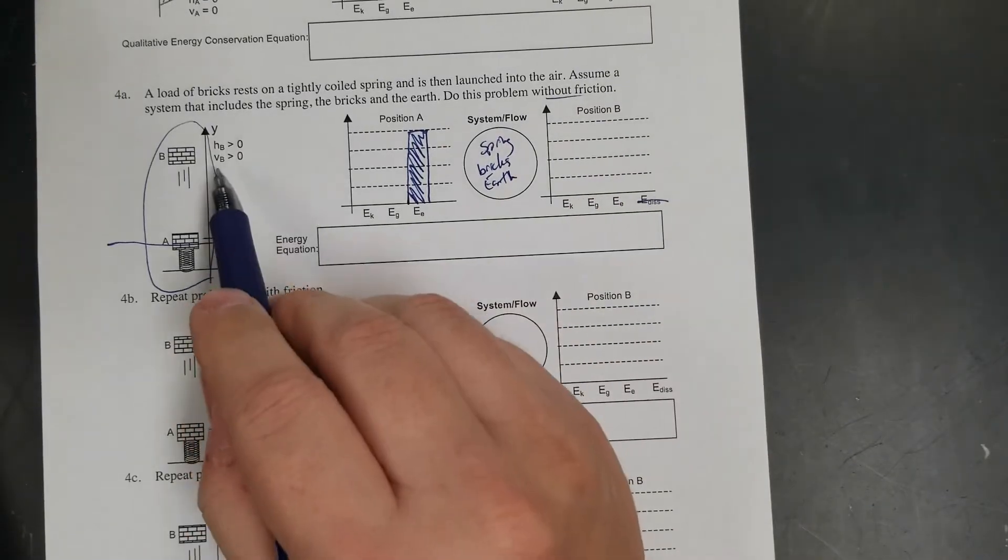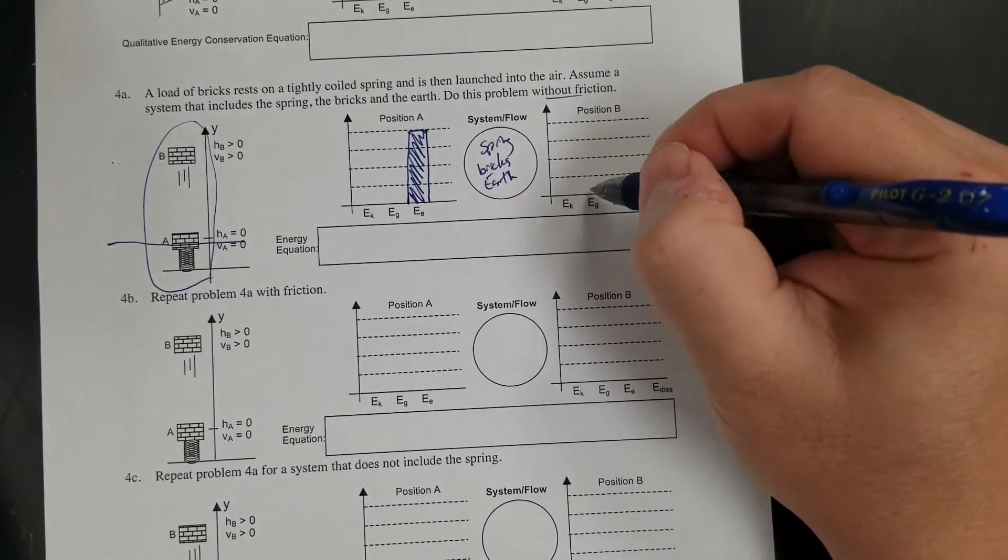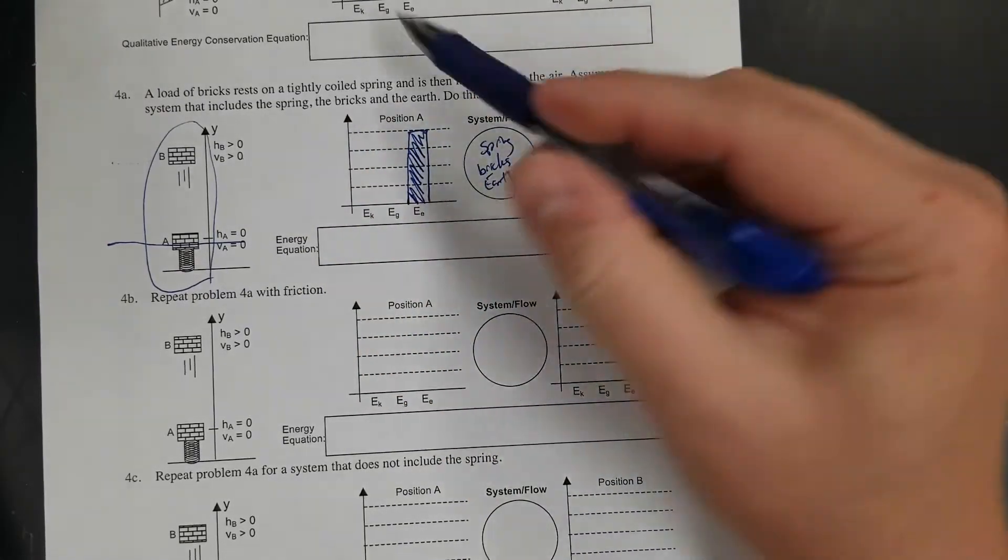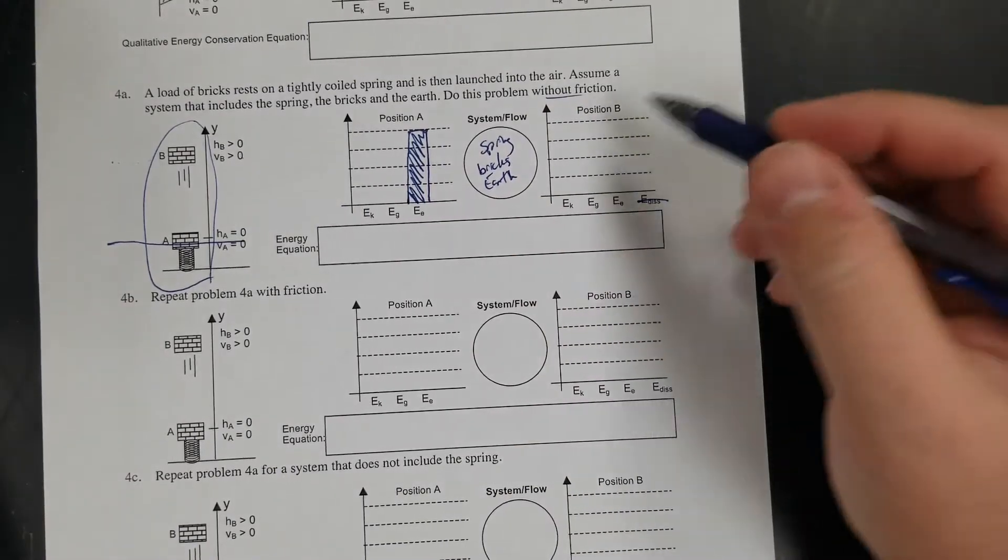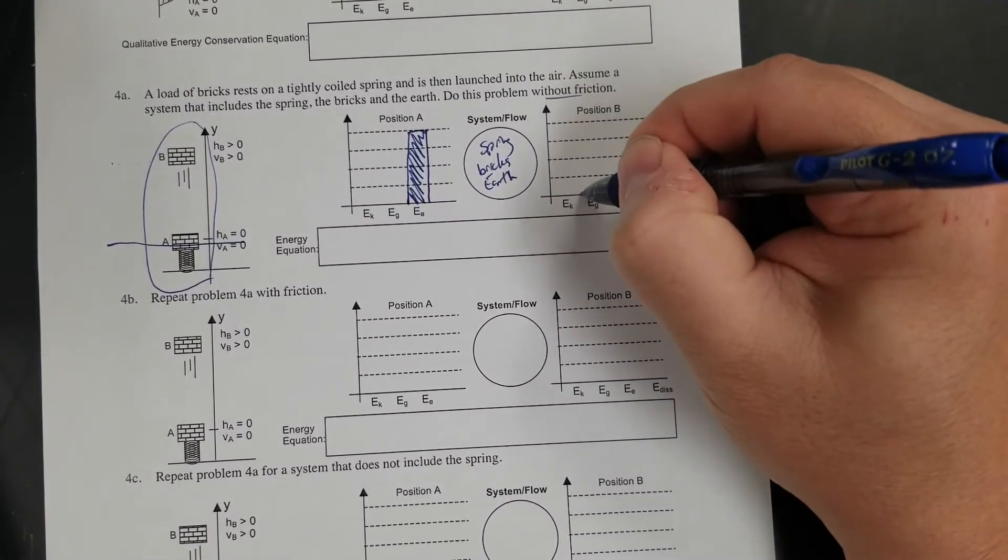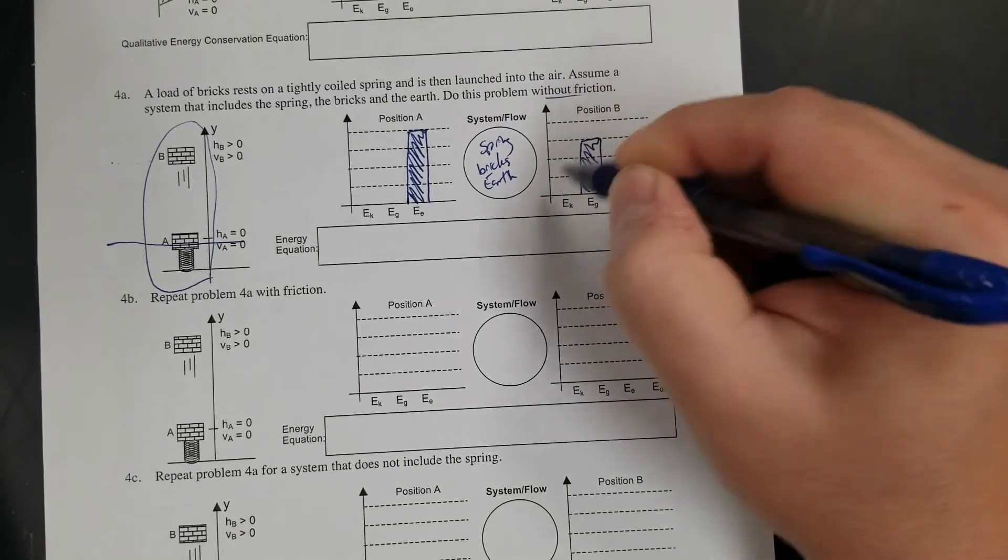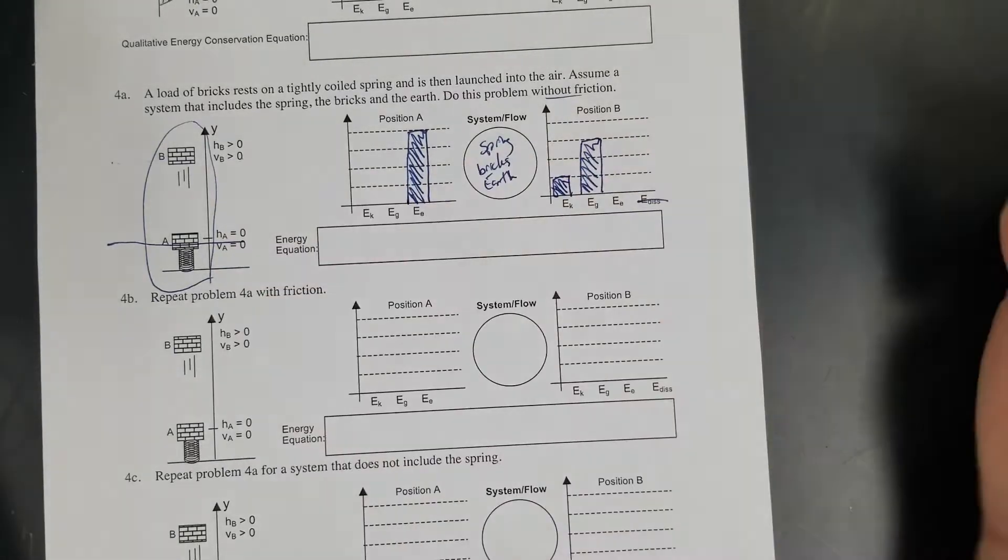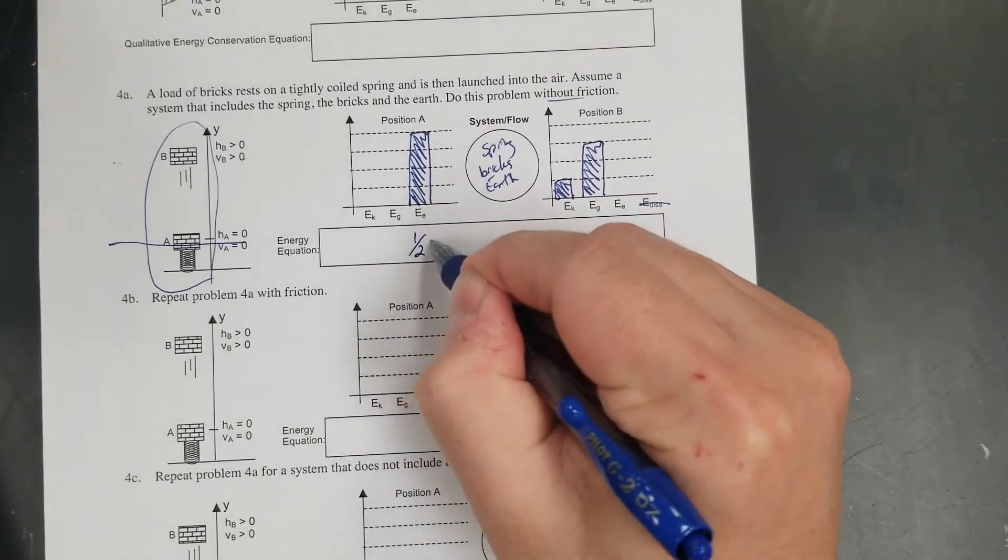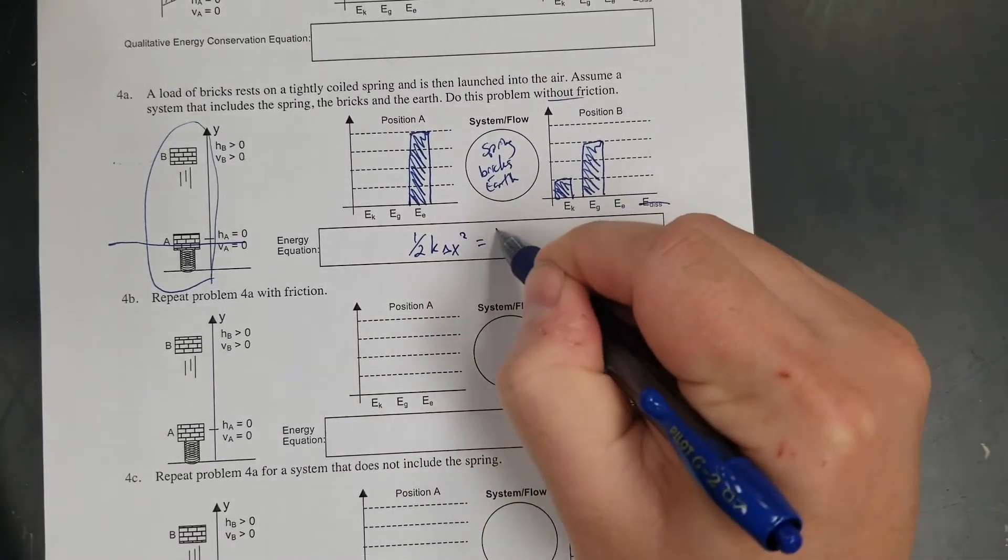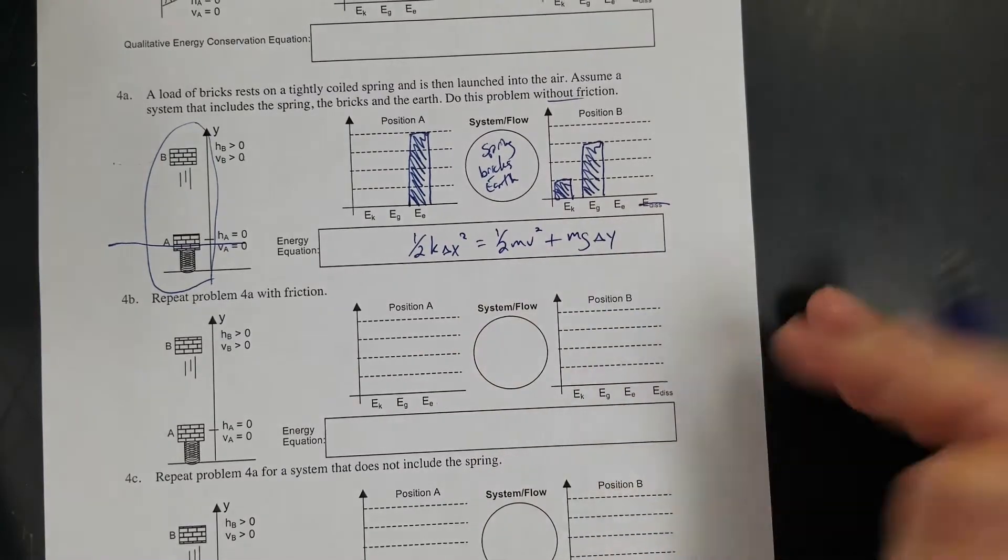At position B, it's above the ground, so it's got gravitational. It's moving, so it's got kinetic. It's frictionless, so there's none of that. The spring is already let go, so there's no elastic. It's just between kinetic and gravitational. I'm going to say three gravitational and one kinetic because it's high up. As long as it adds up. So one-half kx squared equals one-half mv squared plus mg delta y.